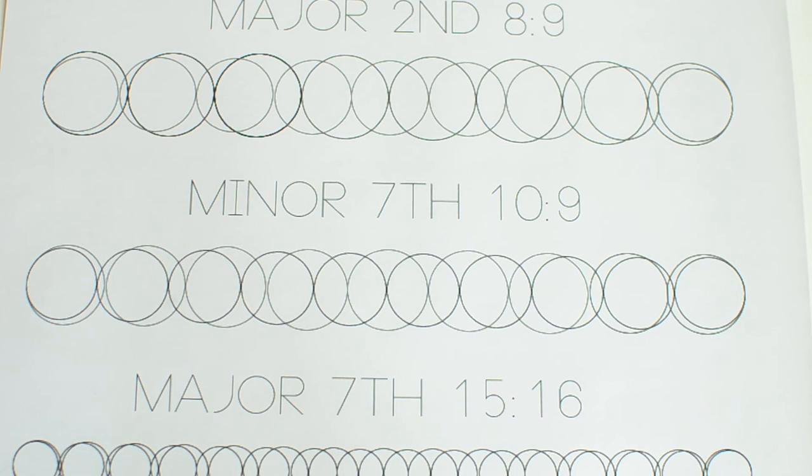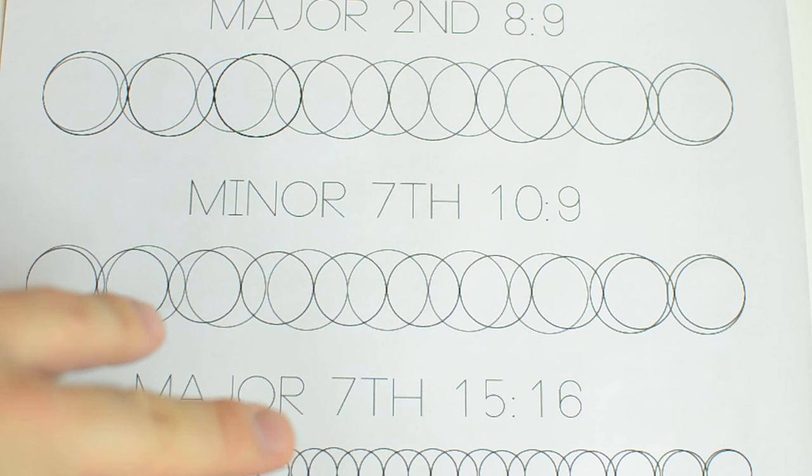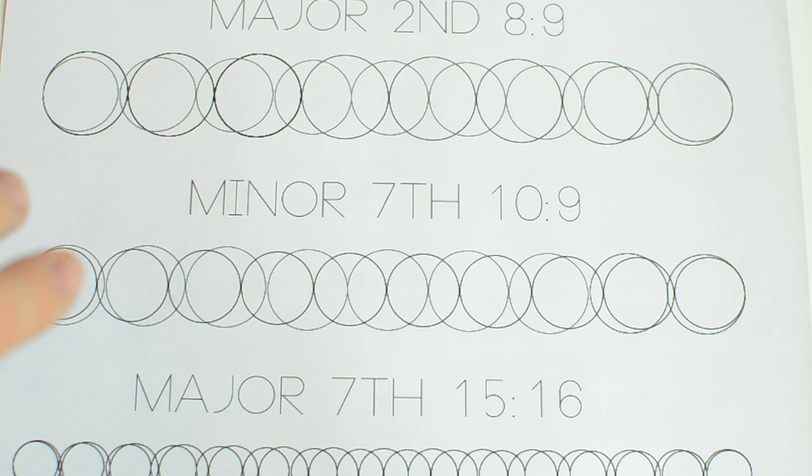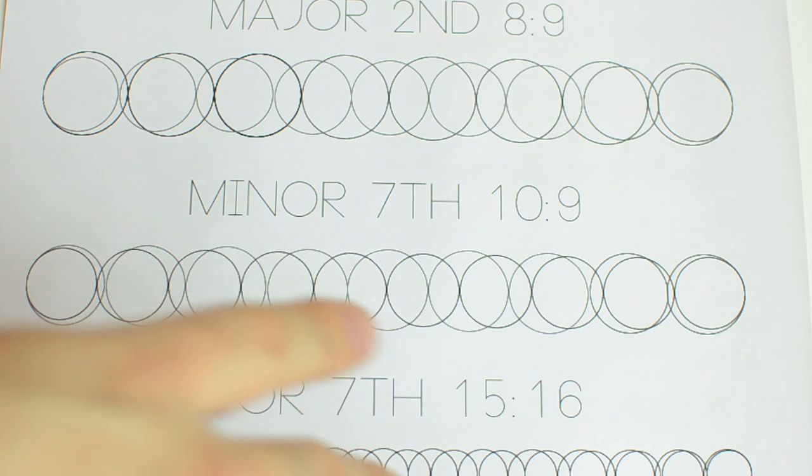So this is sort of what we mean by consonance and dissonance, is that things get complicated and then they get simple. And these are just intervals. These aren't even chords. Chords make things much more difficult because they have multiple intervals within them.